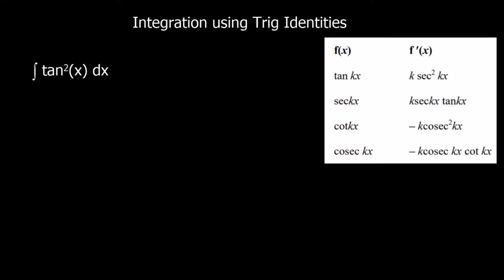Now we're going to look at more integration using trig identities. Tan squared x is one I can't integrate directly. I've got these standard results from the formula book: I can integrate sec squared x and get tan x, I can integrate sec x tan x and get sec x, I can integrate negative cosec squared x and get cot x, or integrate negative cosec x cot x and get cosec x. But I've got no standard result for tan squared x — however, I've got an identity that can change it into sec squared x.